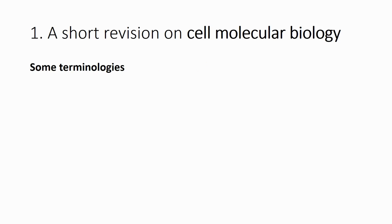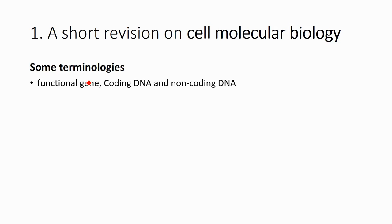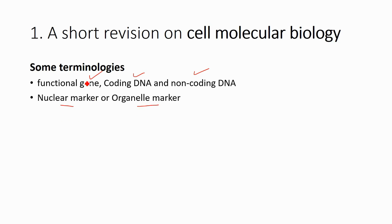There is some terminology you will encounter over the next two weeks — actually, a lot of it you have already seen in your previous courses on cell biology and genetics. For example, we are going to talk about functional genes, coding DNA, non-coding DNA, nuclear markers, and organelle markers. Both are genetic markers; it's just that the genetic information comes from different parts of the cell — either the nucleus or the organelle. For prokaryote and eukaryote cells, the cell structure is different, so where the genetic information is stored is also quite different.